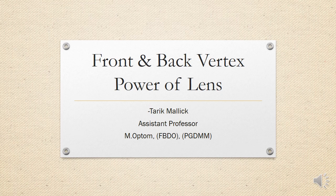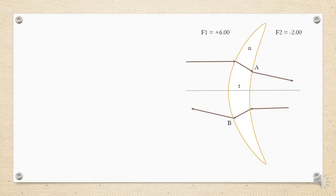Hello everyone, today we will be discussing front and back vertex power of a lens. This topic is very useful in dispensing, as some of the formulas here are important in terms of effective power when we do a refraction. If this is an ophthalmic lens with a refractive index n and a central thickness of t, we know that there are two surface powers: F1 and F2.